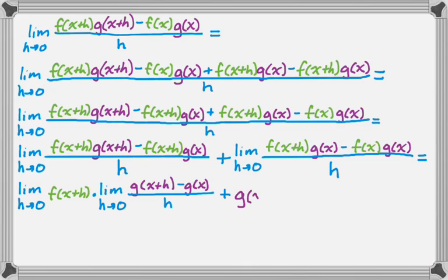And then I'll break up this to g of x. And that doesn't have an h in it, so I don't need the limit anymore. It's just constant that I'm factoring out. And the limit as h approaches 0 of f of x plus h minus f of x over h. So I'm in pretty good shape here.